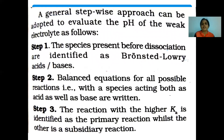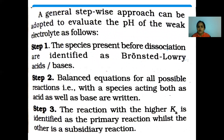A general stepwise approach can be adopted to evaluate the pH of a weak electrolyte. The species present before dissociation are identified as Brønsted-Lowry acids or bases. Then balanced equations for all possible reactions, with species acting both as acid as well as base, are written. The reaction with the higher Ka is identified as the primary reaction, whereas the other is a subsidiary reaction.